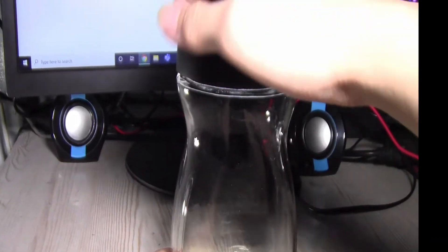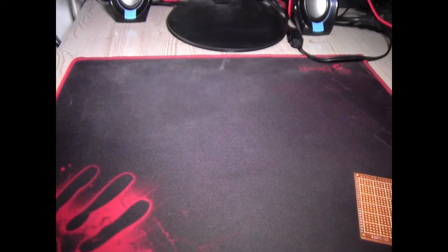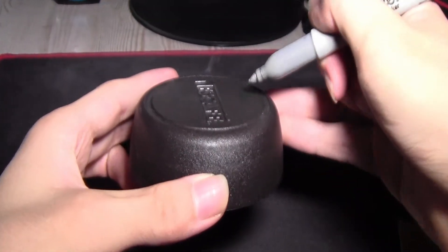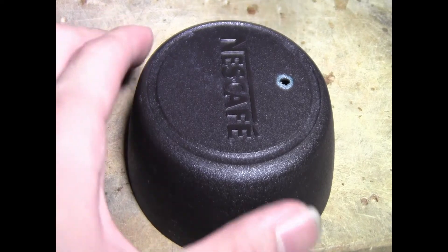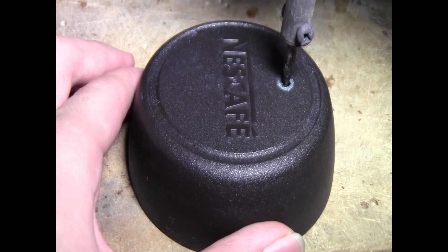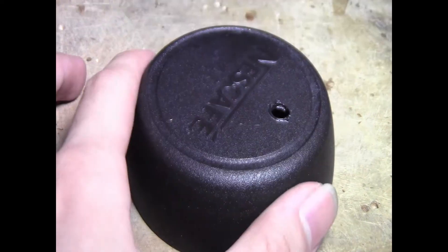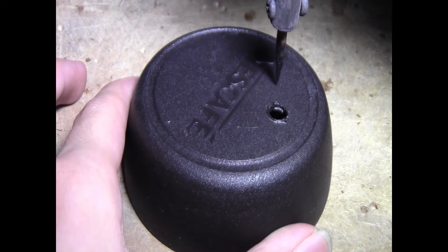Then, get your enclosure's cap and mark the holes where you want the tube and the motor wires to go. Using a hand drill or an old soldering iron, make the holes for the tube and the motor wires.